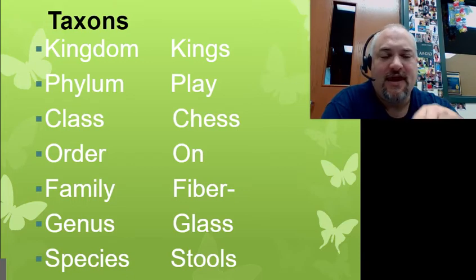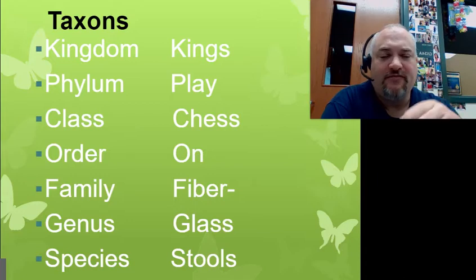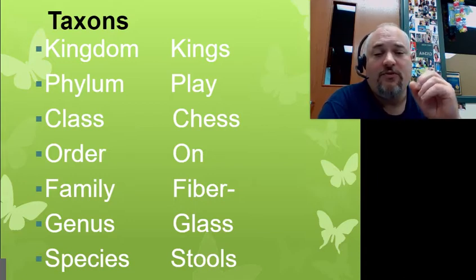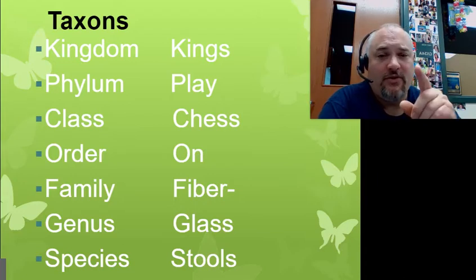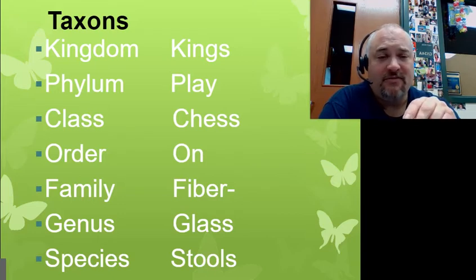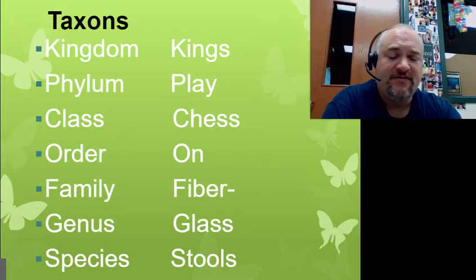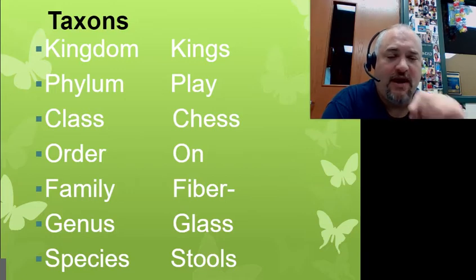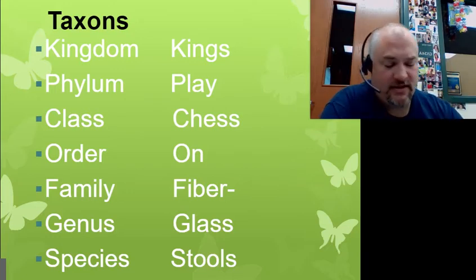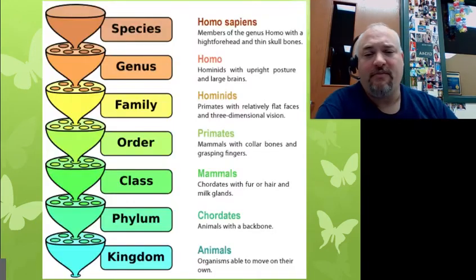Kings play chess on fiberglass stools: kingdom, phylum, class, order, family, genus, species. I would recommend coming up with your own mnemonic device — remember, this is one of the questions on the study guide. I do give you mine as a reminder, but what I want you to do is come up with your own; that'll help you remember it a little bit better.